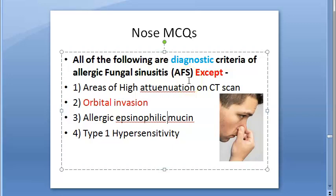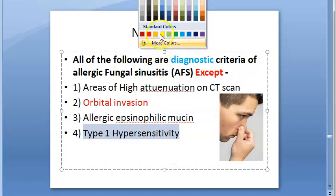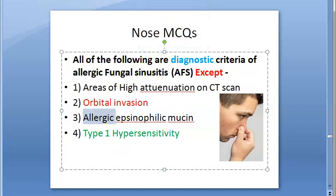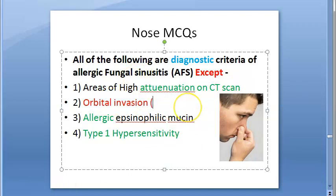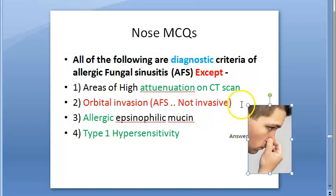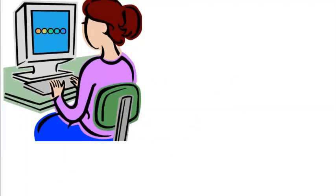The answer is orbital invasion — it is NOT a diagnostic criterion of allergic fungal sinusitis. The diagnostic criteria include areas of high attenuation on CT scan, allergic eosinophilic mucin, and Type 1 hypersensitivity. Allergic fungal sinusitis is not invasive, which is why orbital invasion is excluded.